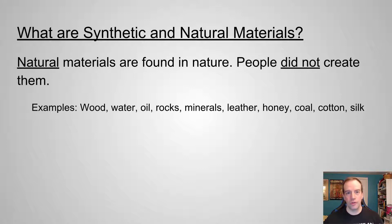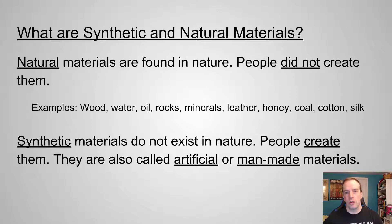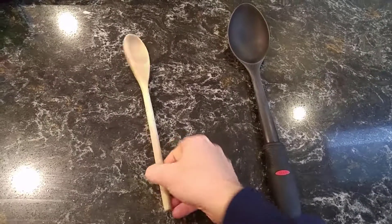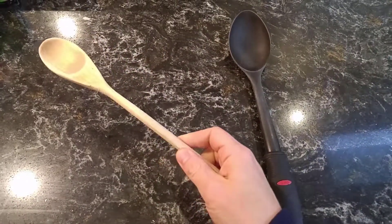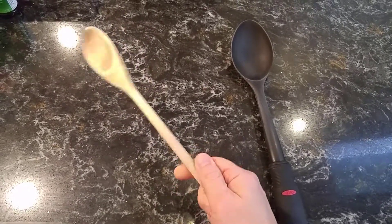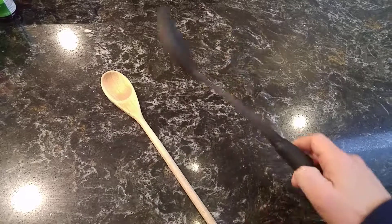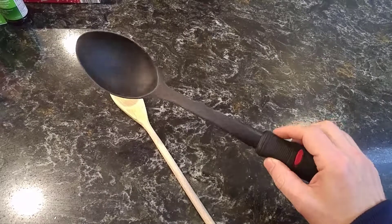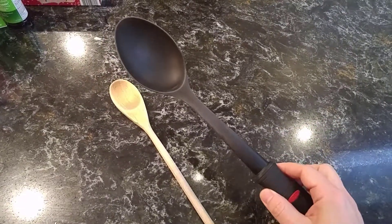This is opposed to synthetic materials, also called artificial or man-made things. These have to be changed from what they were in nature — that natural material — into something that's synthetic. This wooden spoon is natural; it's just made from wood that's been shaped and keeps the same properties of that wood. Whereas this plastic spoon was made through a series of chemical reactions from petroleum. It is synthetic.